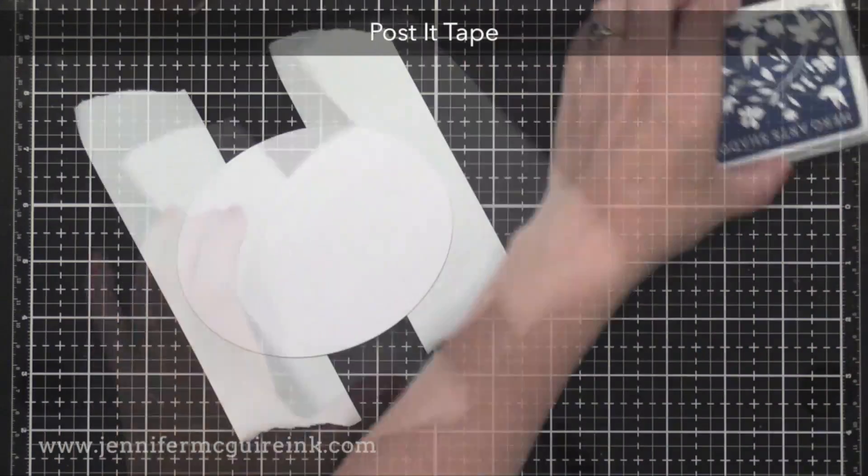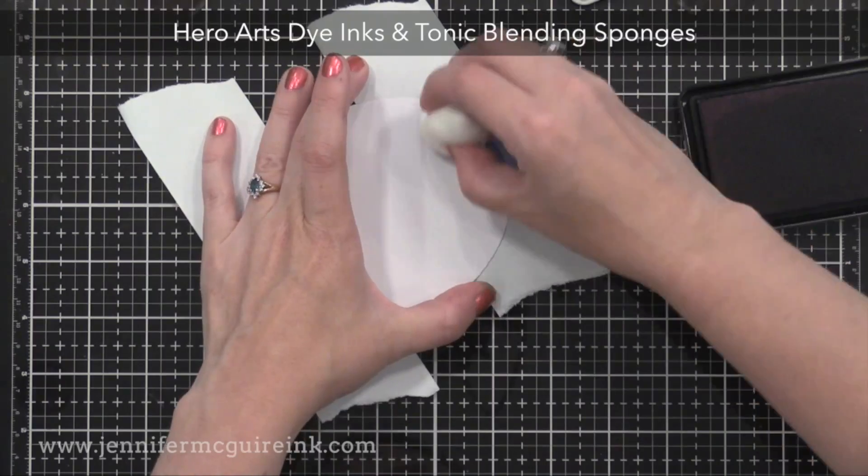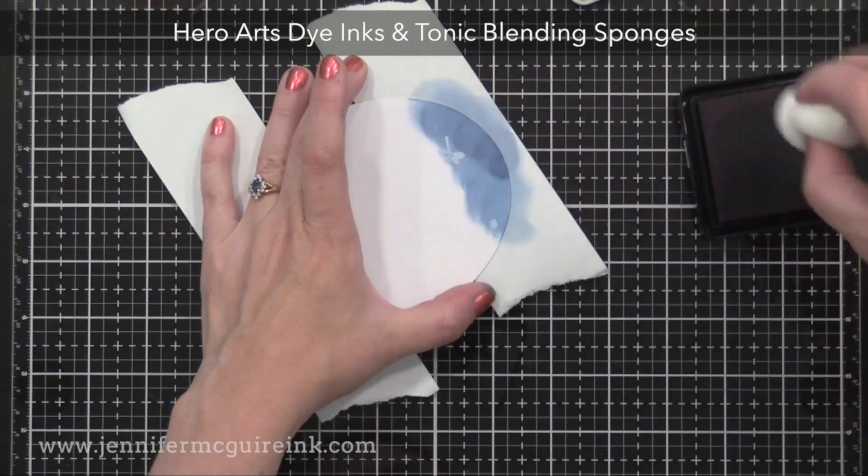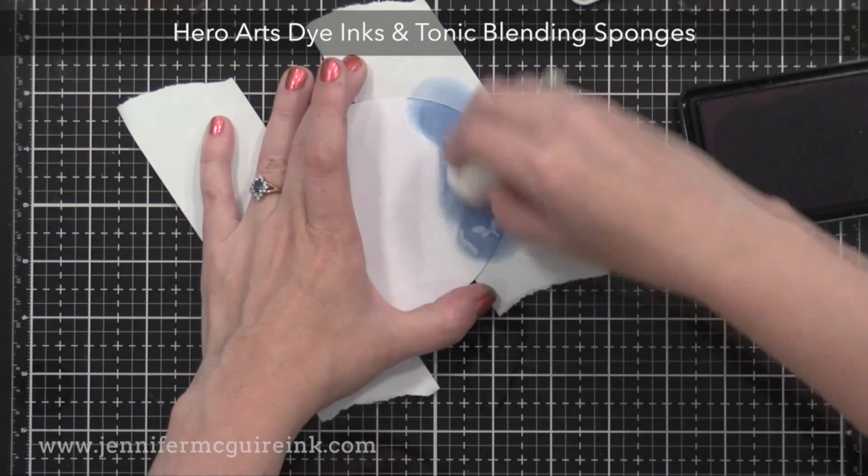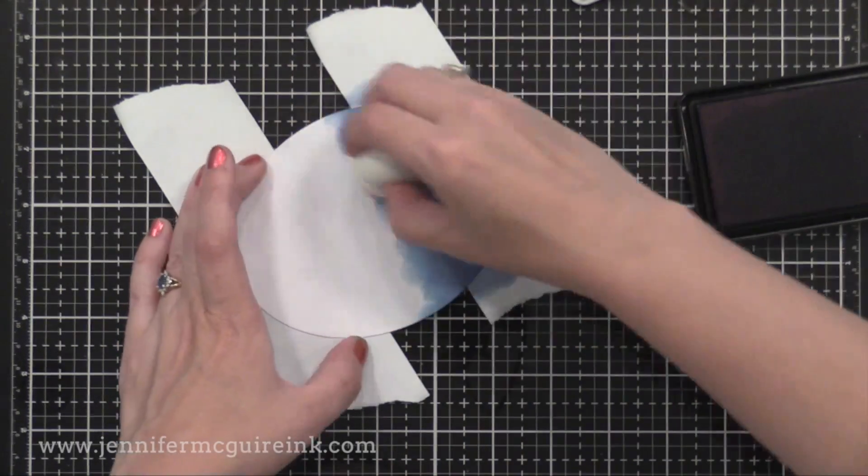Next I'm going to apply dye ink over this. I find the darker the ink you use, the more magical the results are. I'm using an inking sponge. However, you can drag the ink pad across it if you prefer, or use some kind of rolling tool.